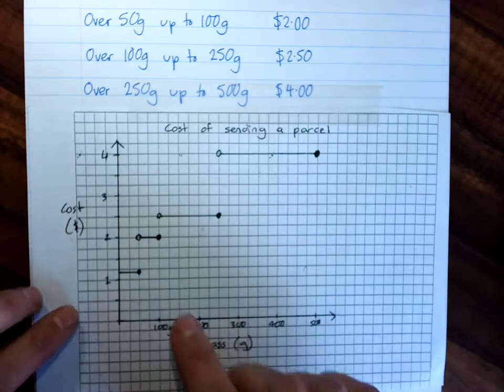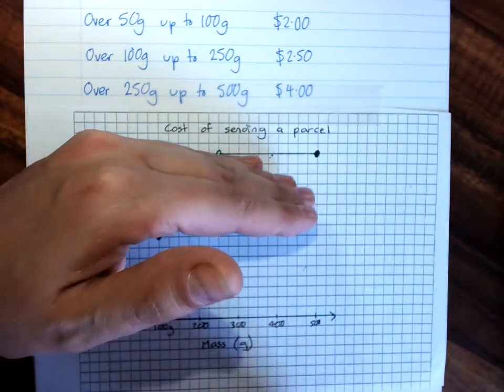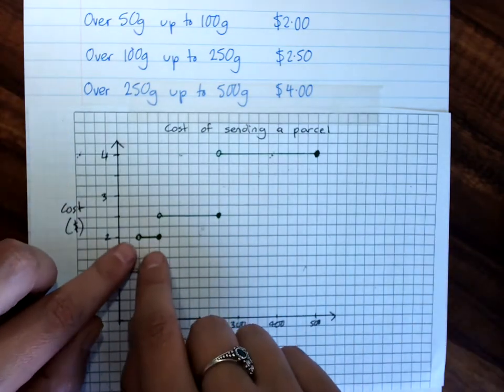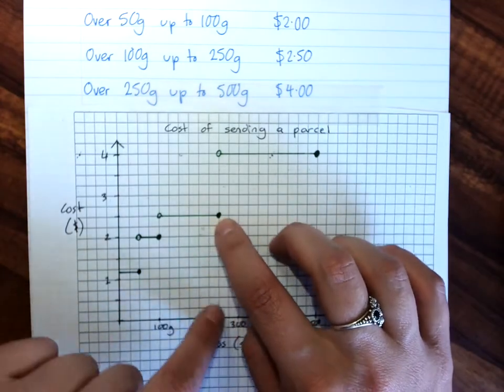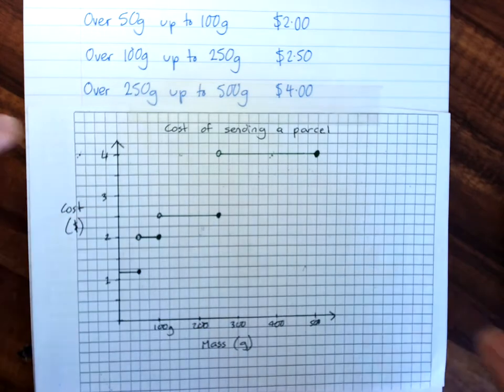It lets us see, quite clearly, that there's different fixed prices at different values, and the only thing to be careful of is closed circle, if the X value is included here, open circle, if it's not included here.